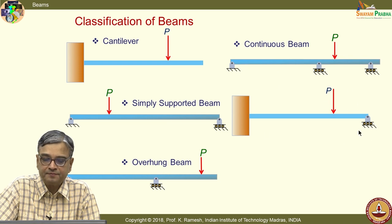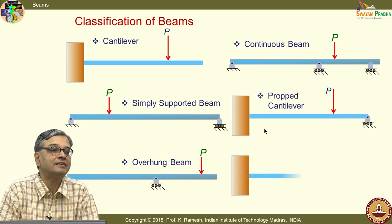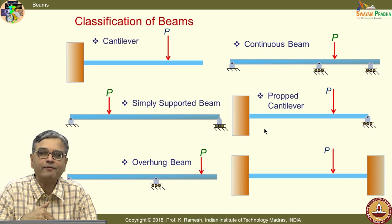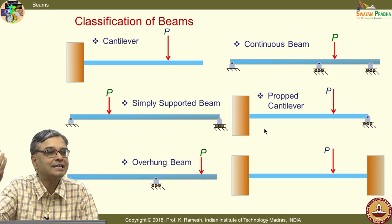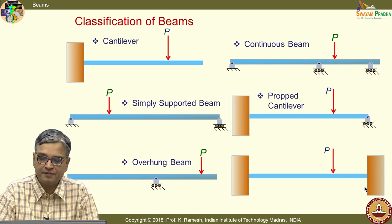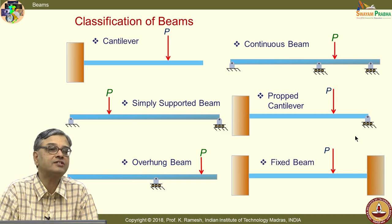Here is another example: the difference between a cantilever and this beam is that the end is not free but supported. A practical example is a big portico — many large porticos have a support at the end. I also have another type of beam with a fixed support at both ends — you call this a fixed beam.